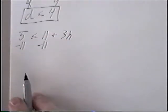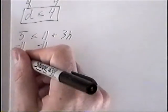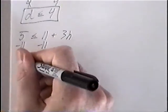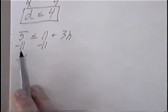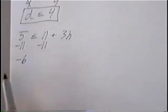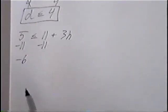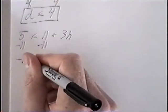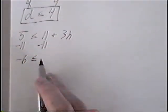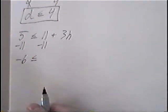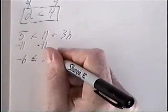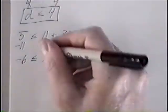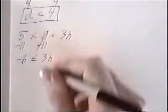5 minus 11 would be negative 6. With different signs, we'll subtract the numbers. 11 is bigger, so we'll keep the negative sign. The inequality would stay the same since we're just subtracting a number. And 3h would come down, the 11s would cancel.